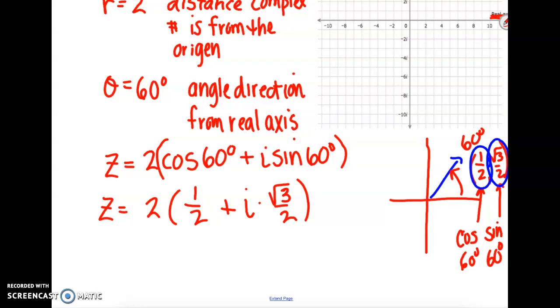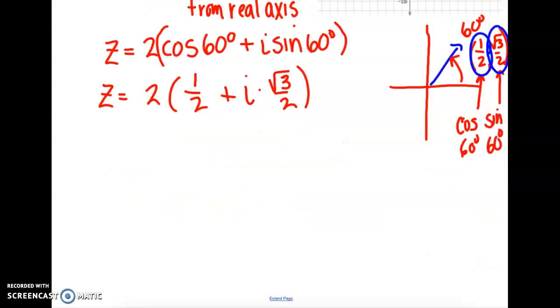Now we're going to simplify this. So z equals 2 times 1 half. I'm going to interchange the order. I'm going to put this as the square root of 3 over 2 times i.